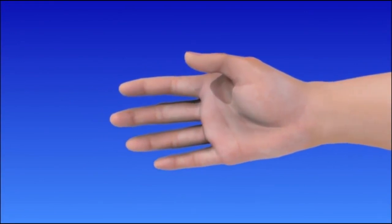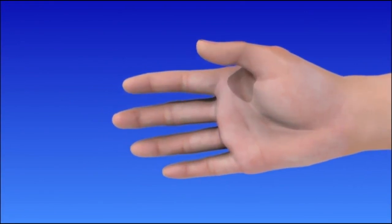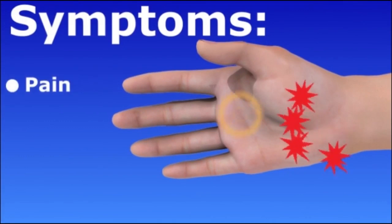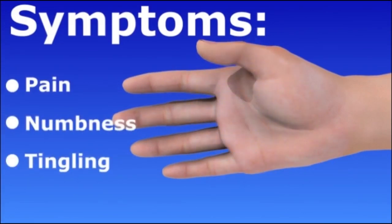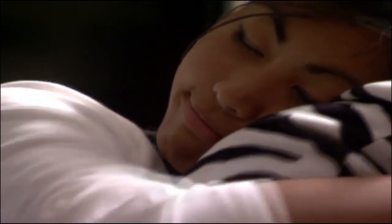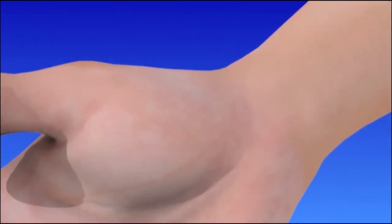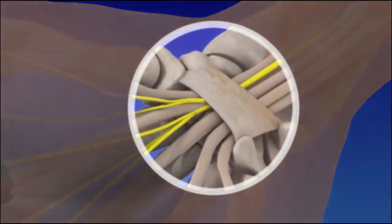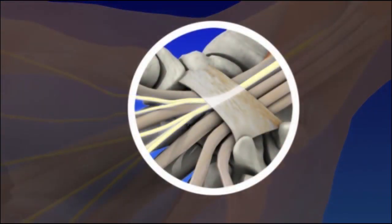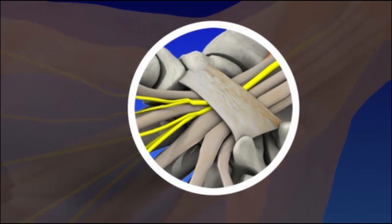Carpal Tunnel Syndrome is a common problem affecting the hand and wrist. Symptoms include any combination of pain, numbness, and tingling in the hand. Very commonly, symptoms occur at night, waking you from sleep. All of the fingers except the little finger are usually involved. Carpal Tunnel Syndrome occurs when the pressure within the tunnel increases, putting pressure on the median nerve, usually from enlargement of the tissues surrounding the tendon in the tunnel.